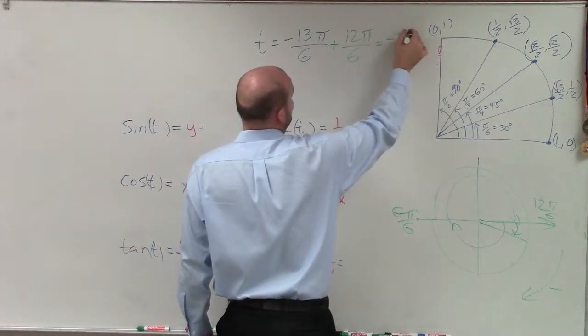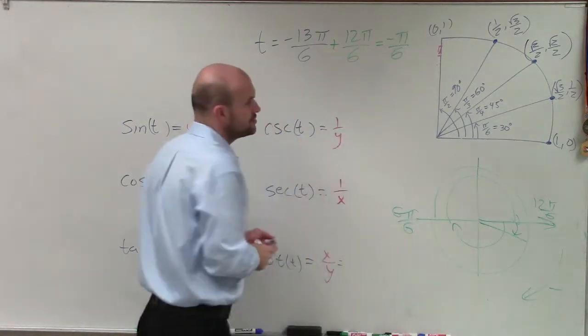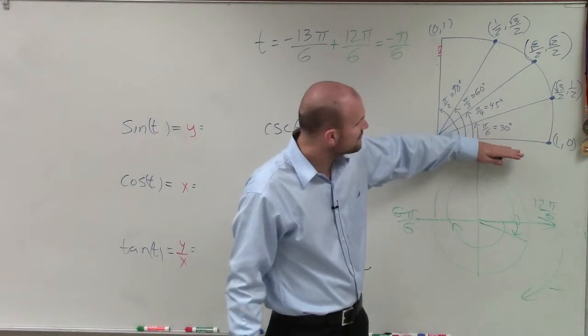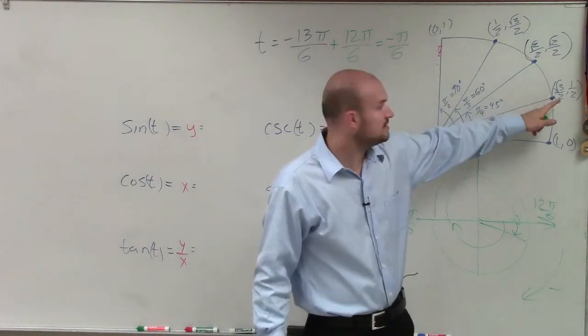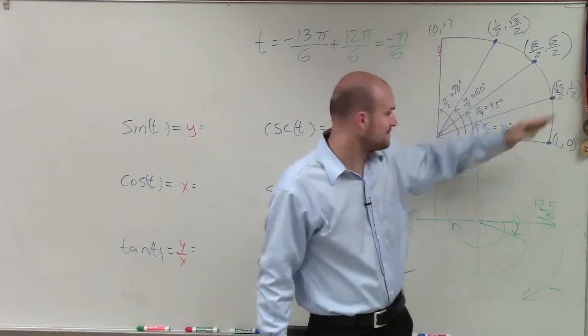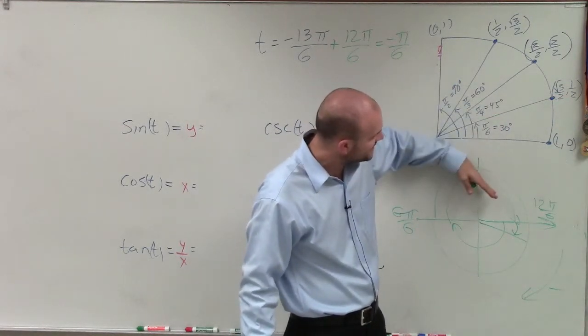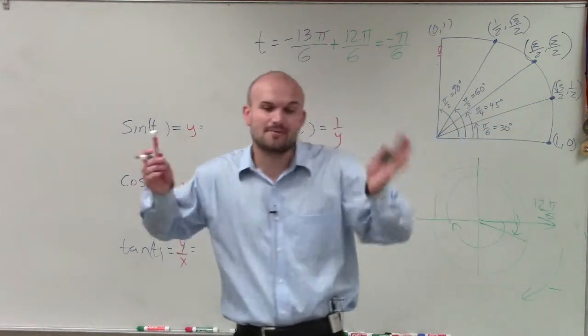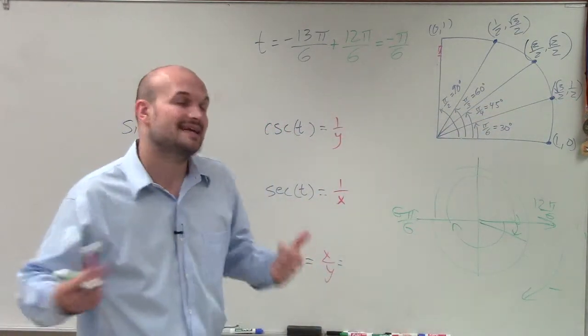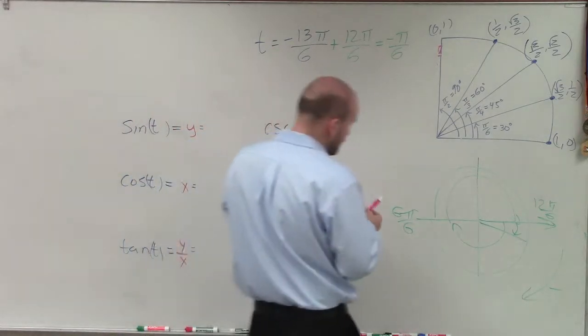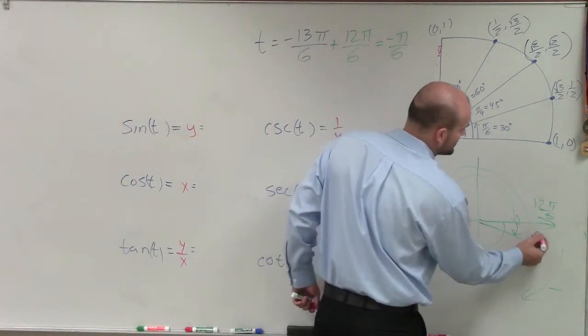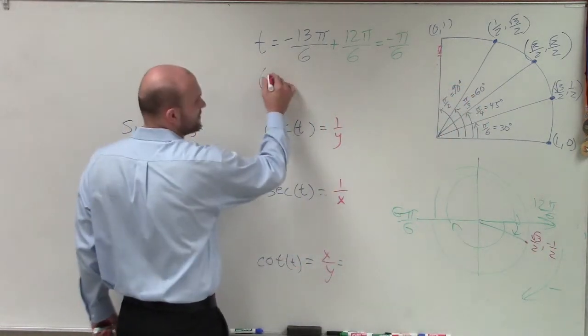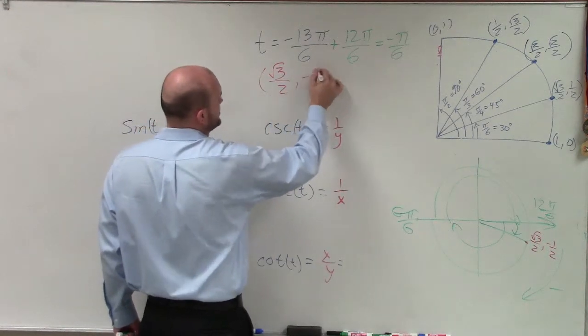So if you look at my unit circle, we know that my angle is going to be in the fourth quadrant. Well, π over 6 going in the positive direction has this point, square root of 3 over 2 comma 1 half. But now I'm going π over 6 in the negative direction. So it's going to be in the fourth quadrant. It's still going to be the exact same point. But instead of my x and y both being positive, now my y is going to be negative. So therefore, the coordinate point down here is square root of 3 over 2 comma negative 1 half. So I'm going to write that up here for us to evaluate our six trigonometric functions.